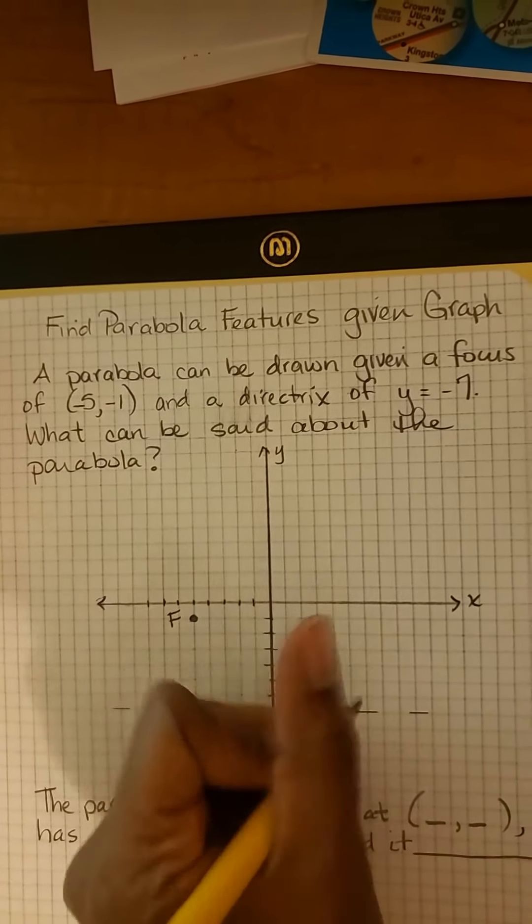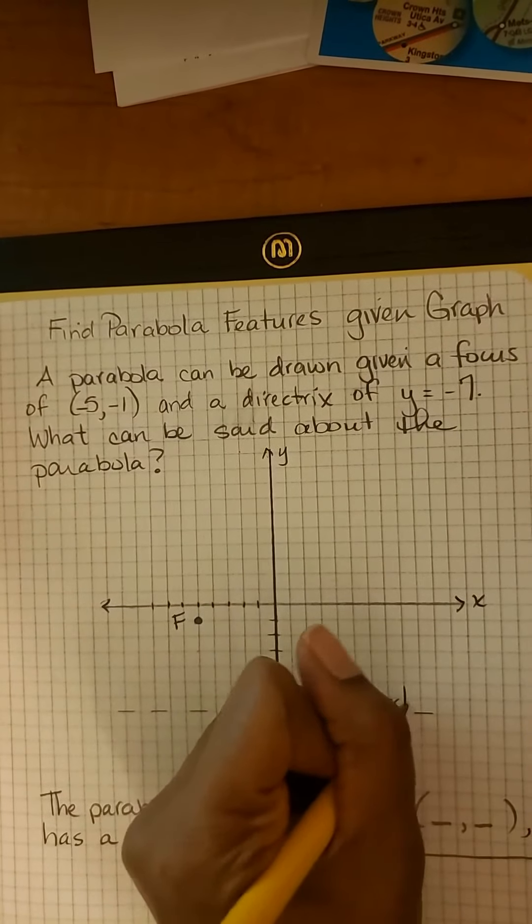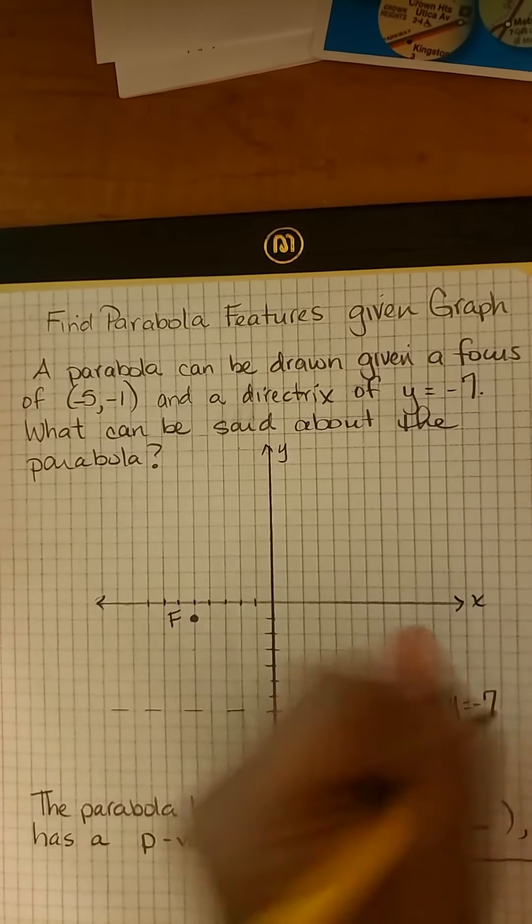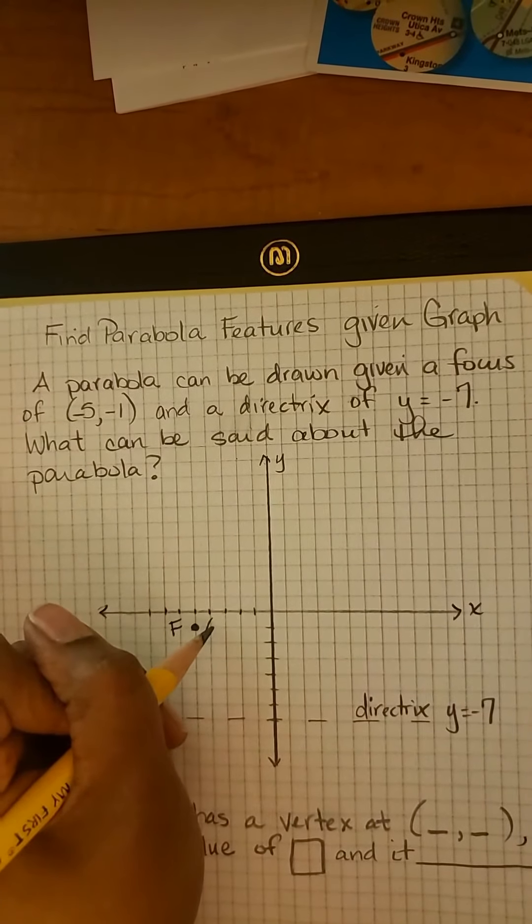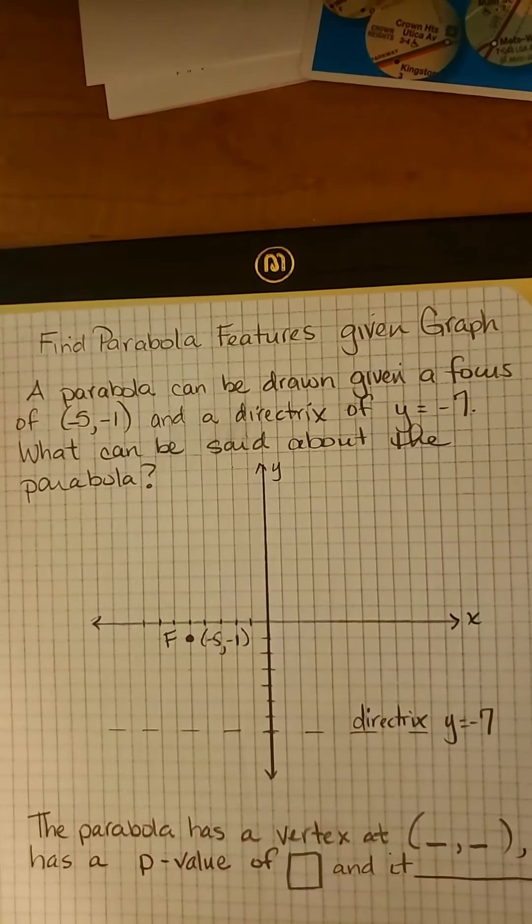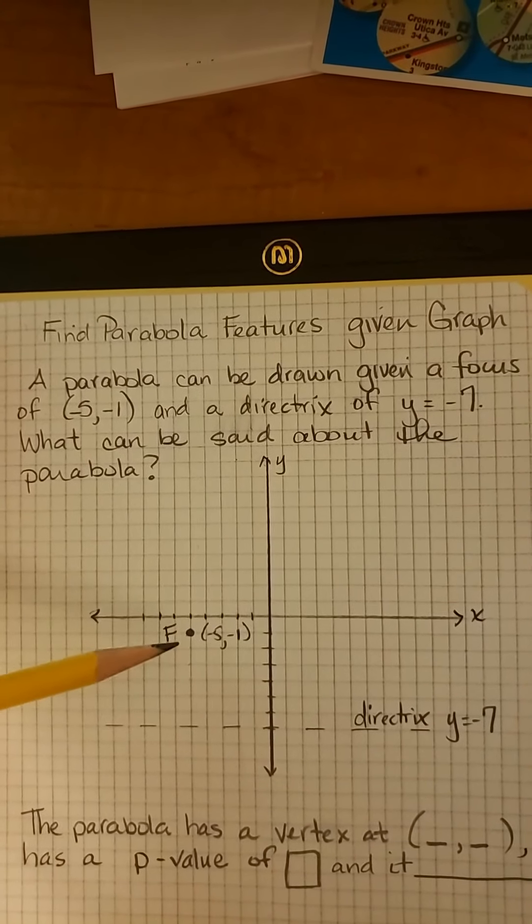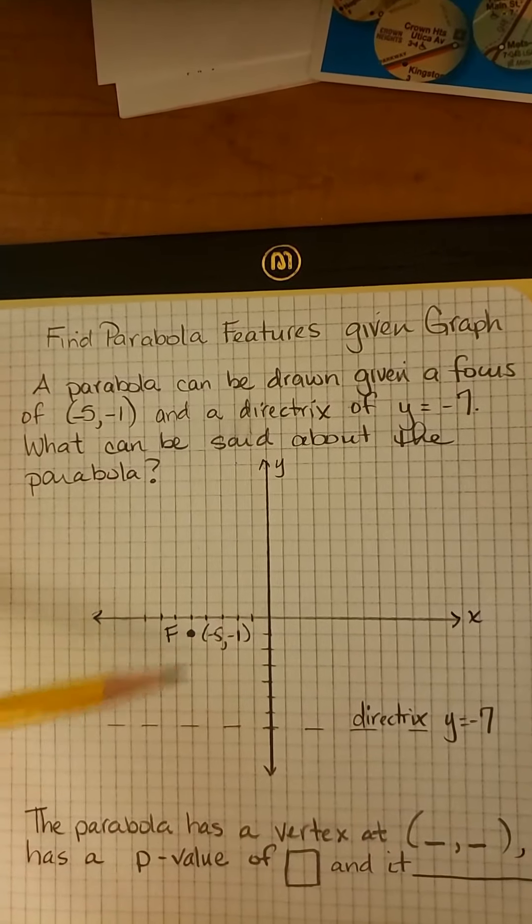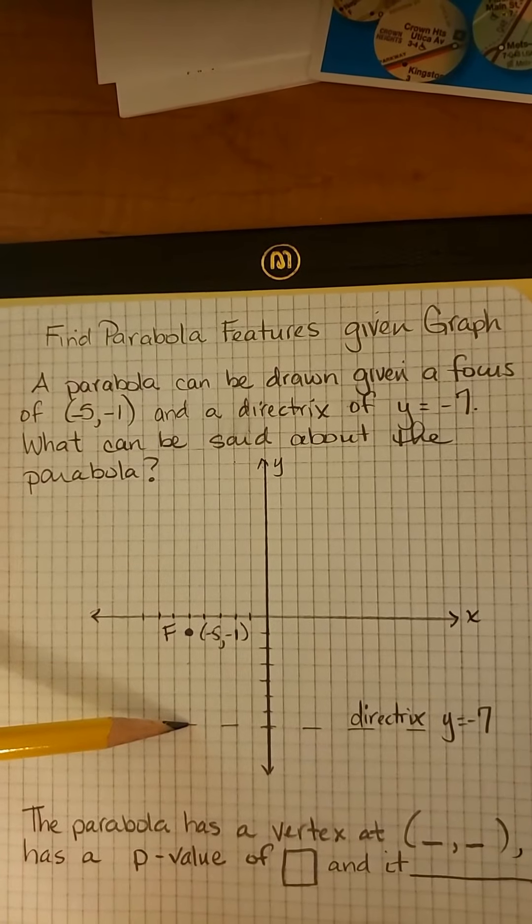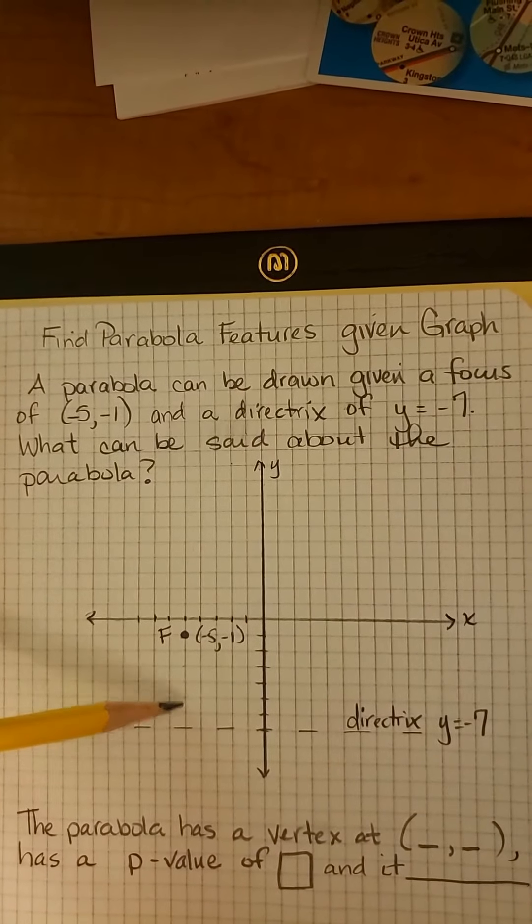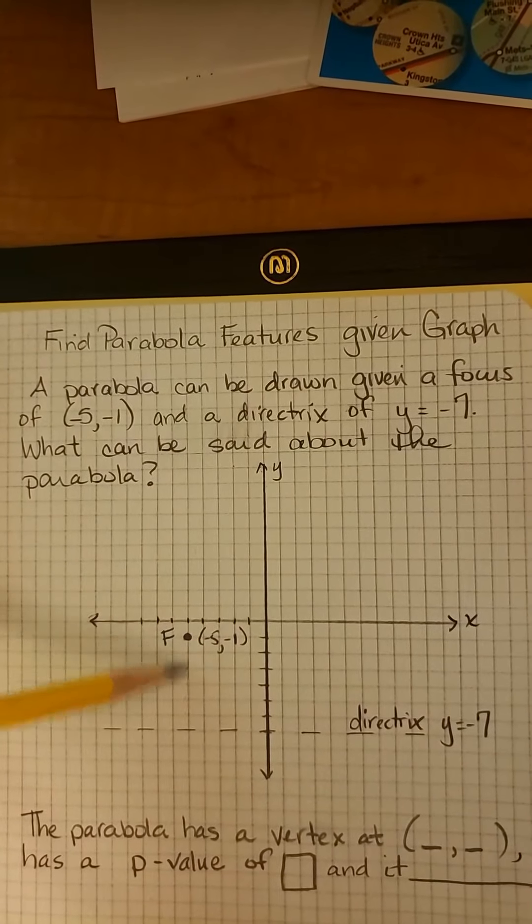This is the focus at (-5, -1). So we know that halfway between the focus and the directrix is the vertex of the parabola. We have 1, 2, 3, 4, 5, 6 units between the directrix and the focus.